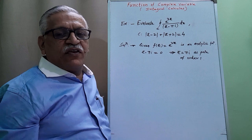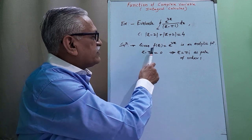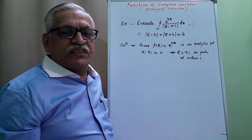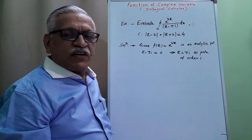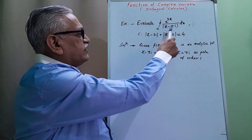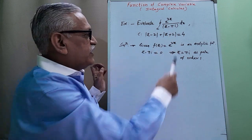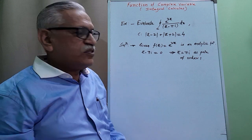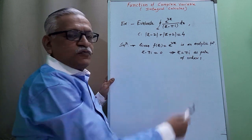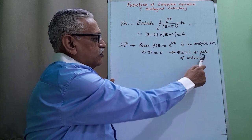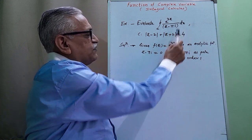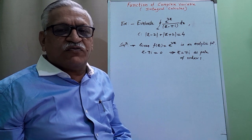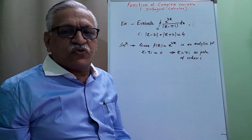To evaluate its value, the given function f(z) = e^(3z) is an analytic function. To determine the pole, we equate the denominator term to 0: z minus πi = 0, giving z = πi as a pole of order 1. It is order 1 because the power of that term is 1. If the power were 2, we would call it a pole of order 2, and so on.